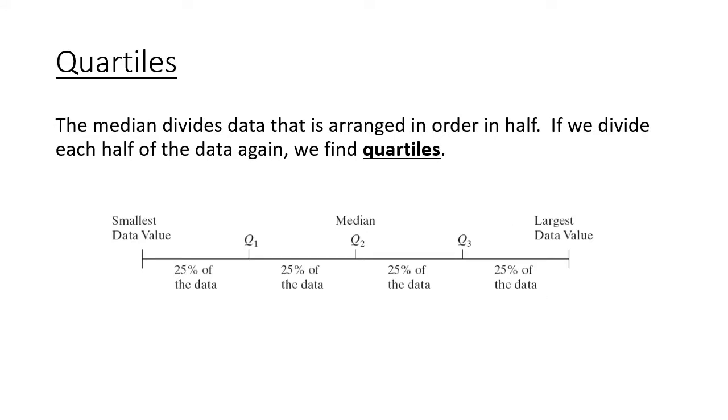We extend medians into this idea called quartiles where we take the median. It divides our data in half. We have the top half and the bottom half of our ordered data. If we divide each of those halves again, that's how we find our quartiles. We're essentially trying to separate our data into quarters, into 25%. You'll see you always have the smallest value up to Q1, up to the median, which is sometimes called Q2, then Q3 and then the largest data value or the maximum. Each one being separated by 25% of the data.